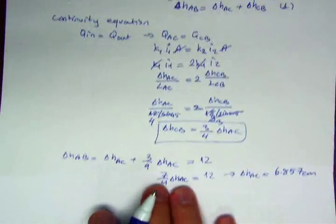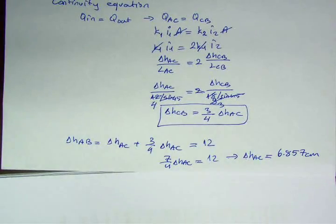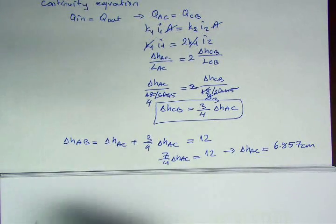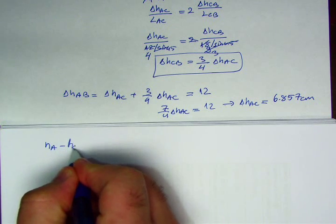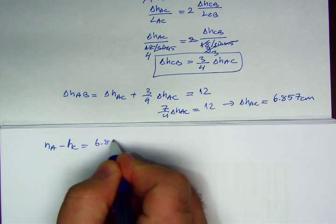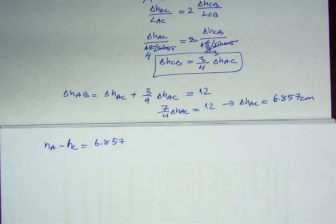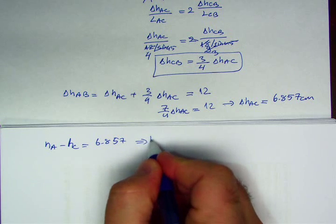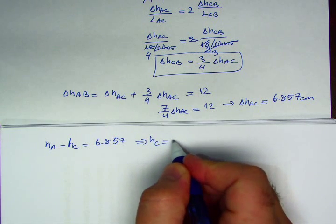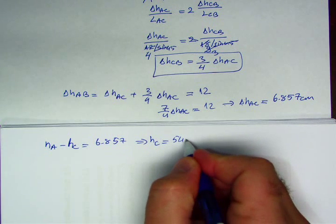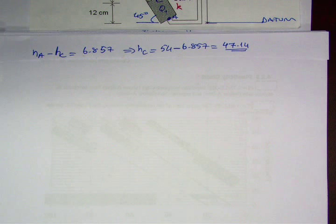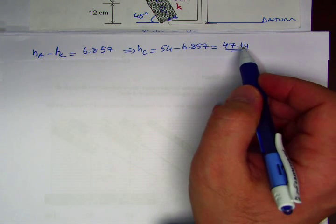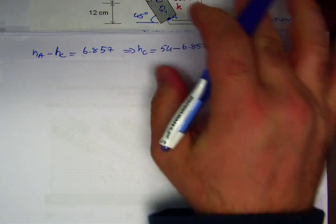Now that is equal to, if I write it down here, HA minus HC is 6.857. Then HC becomes HA, we know that's 54 centimeters, minus 6.857. So the HC is 47.14 centimeters.